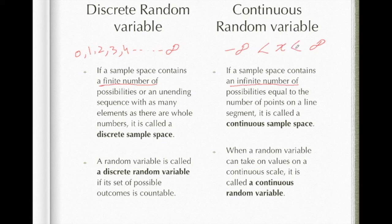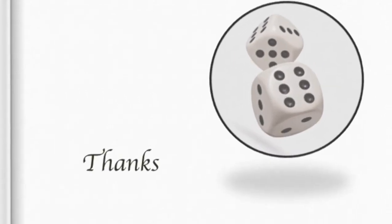The value may be 1.001 or it may be 9.999, any possibility over the sample space from minus infinity to infinity. That is called continuous random variable. When a random variable can take on values on a continuous scale, it is called a continuous random variable.